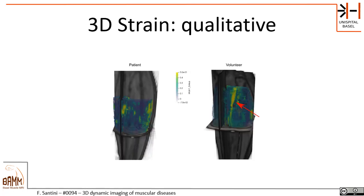This is what the representation of the strain data looks like after acquisition in a patient and in a volunteer. In the volunteer you can see that in the soleus there is an area with a very clear, stronger strain, which is normal for this kind of neuromuscular stimulation. In the patient, we couldn't identify any particular source of strain — the values were lower and the stimulation was not as effective as in the volunteer.